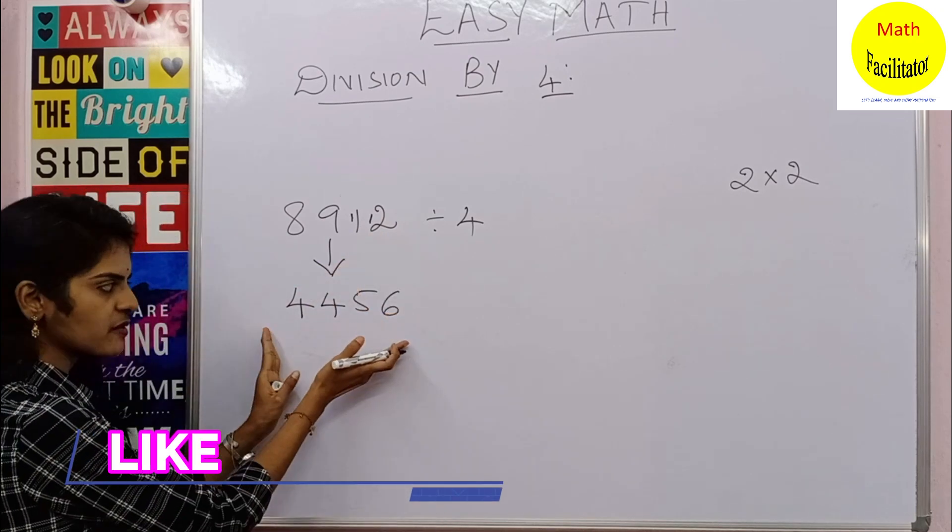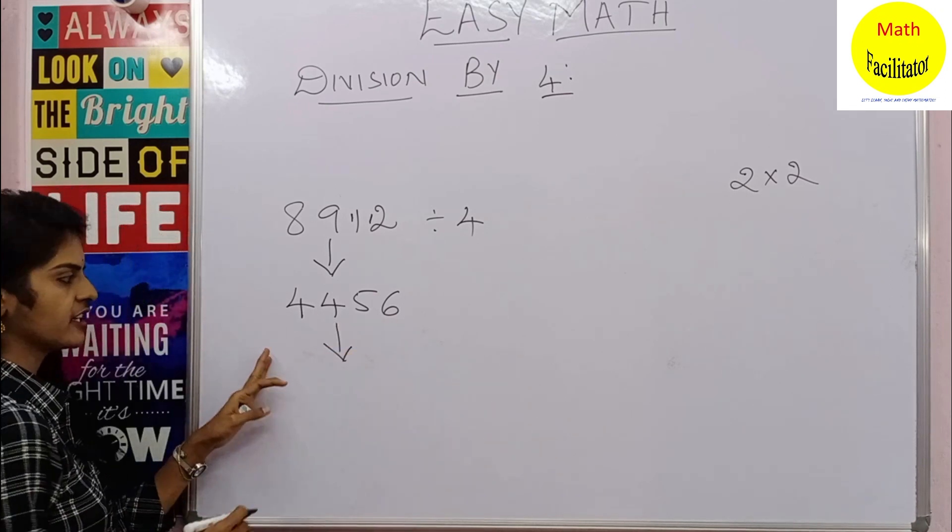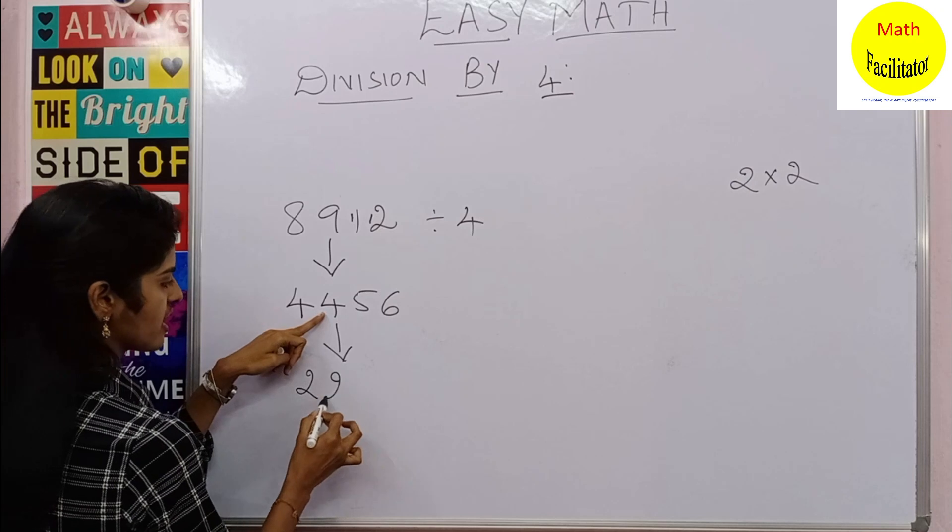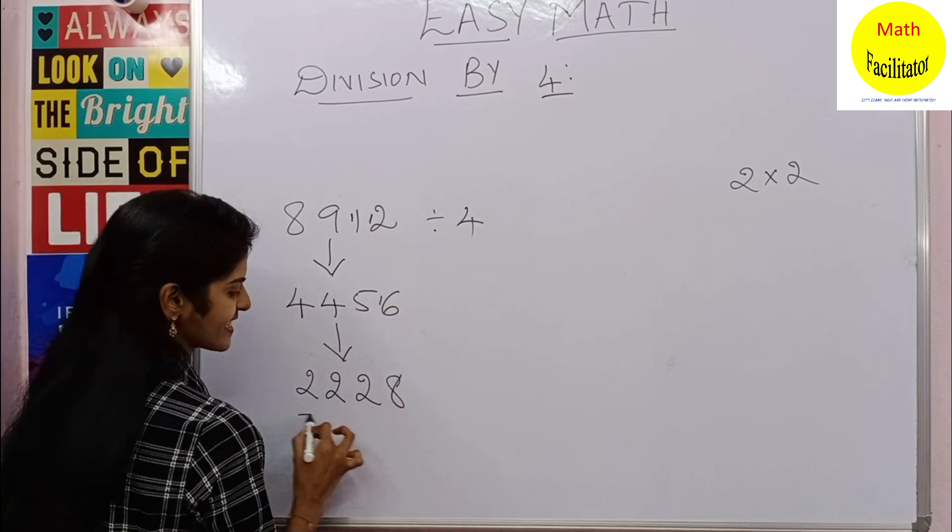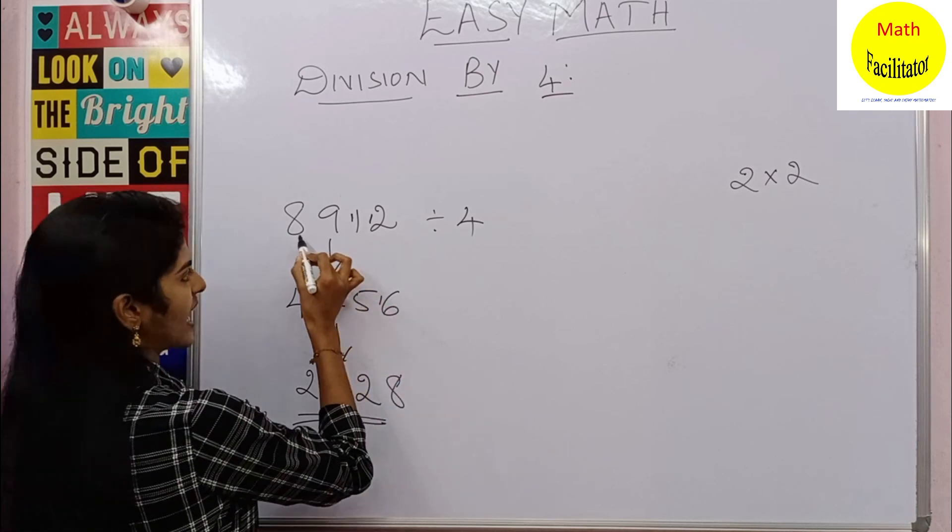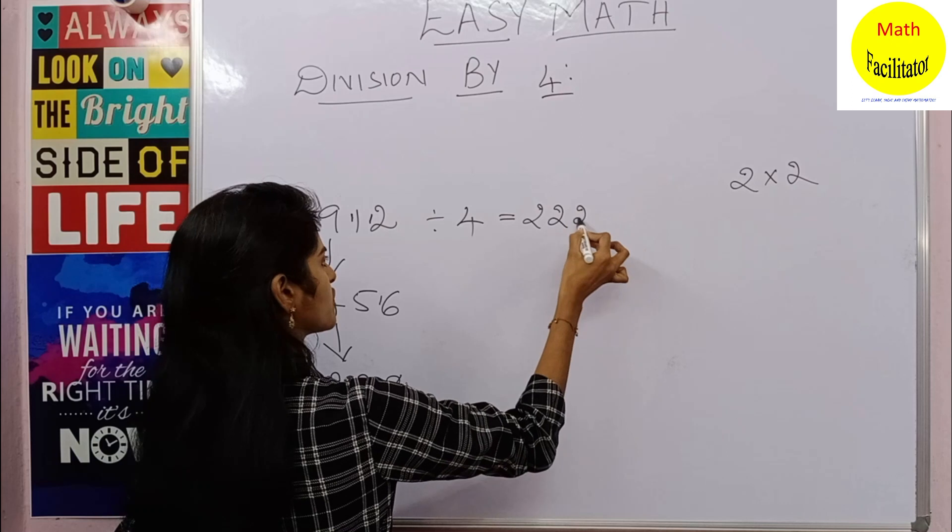So one time division by two is done. Now the second time you have to divide. So two twos are four, two twos are four, two twos are four, and you are left out with one. Now two eights. So this is the answer. So 8912 divided by four is nothing but 2228.